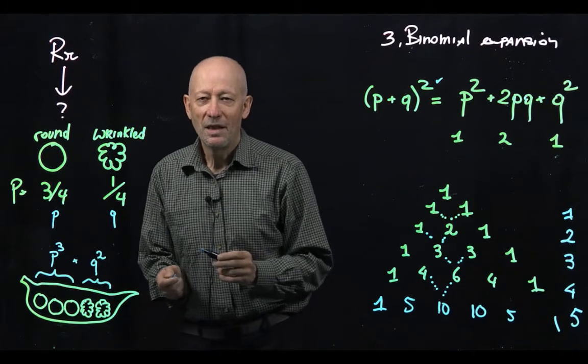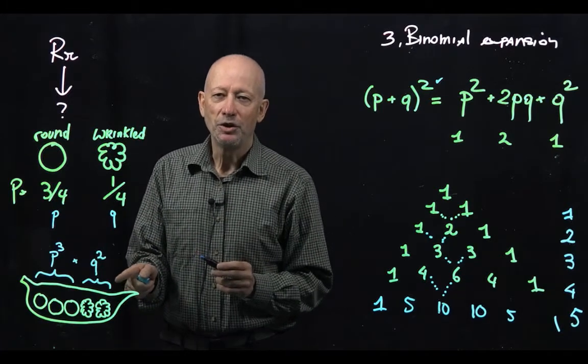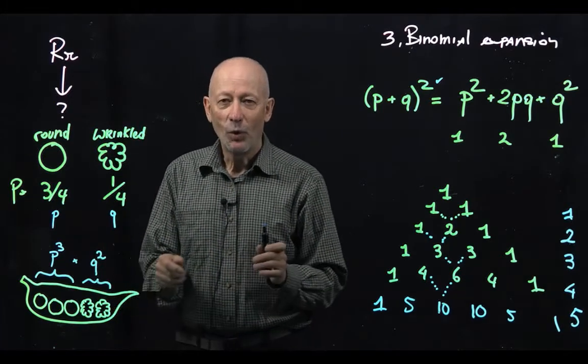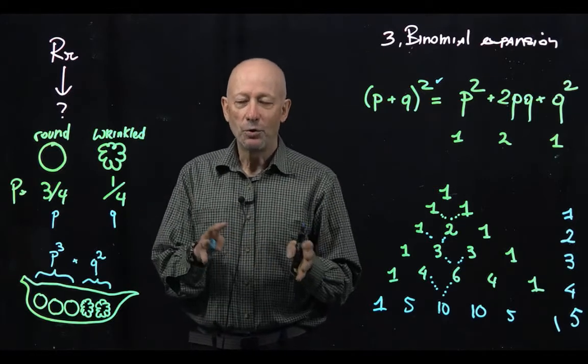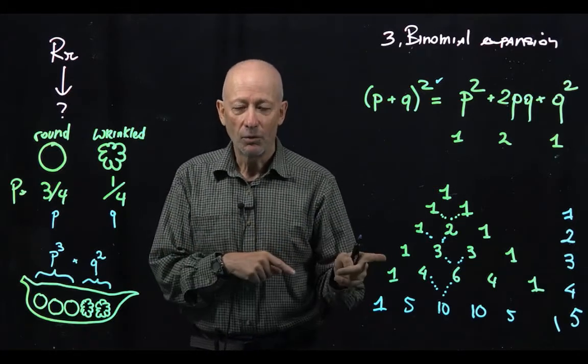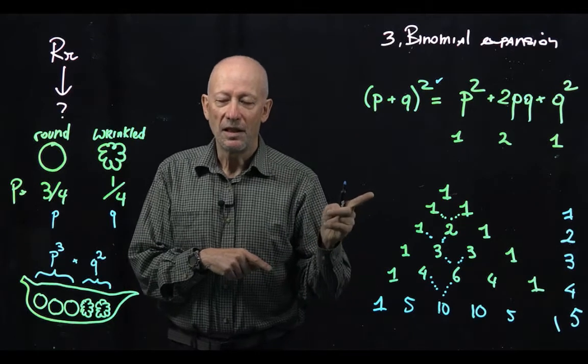What we don't know is how many pods you can make where in any order you have 3 rounds and 2 wrinkles. For that we're going to use the expansion.